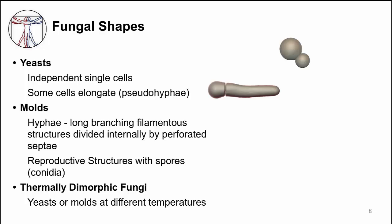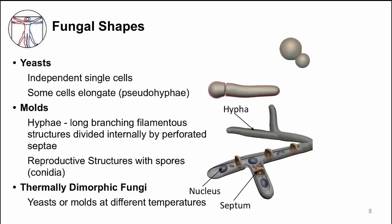Another fungal shape is hyphae — these are long, branching filamentous structures. Some are internally divided by perforated septae, so it's not just a constriction as seen in pseudohyphae. In the picture, the septa are represented by the brown donut-shaped structures. Molds grow as these long, branching structures. To distinguish between molds, we use their reproductive structures, sometimes called fruiting bodies. In nature and on culture plates, reproductive structures appear — though notably, this doesn't happen when molds are inside our body. Clinical microbiologists can use them to identify the specific type of mold.